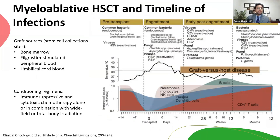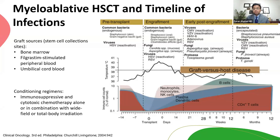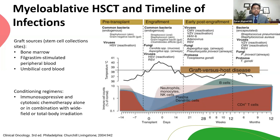Looking at the timeline with stem cell transplant as an example, many factors influence what infection may develop: the graft source, the conditioning regimen, and whether the patient is in the pre-transplant, engraftment, early post-engraftment, or late post-engraftment phase. If a patient is critically ill within the engraftment phase — within 42 days of transplant — I'll focus on common bacteria but also think about fungal infections like Candida and Aspergillus, and viruses like HSV reactivation. Further down the timeline I start thinking about CMV and VZV reactivation.